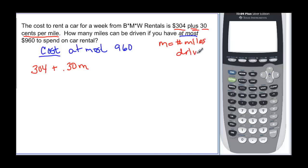So now we've got the cost, that's what we have here. And then if we do at most, at most means it could be 960 dollars but it can't be any more than that. So this cost has to be less than or equal to that 960 dollars. So now we have an inequality that we're ready to solve.